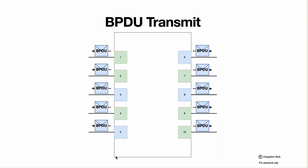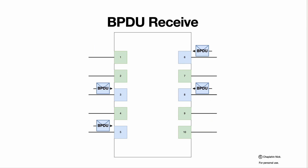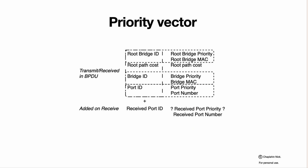Assuming STP is enabled on all ports, the device sends BPDU packets — the STP frames carrying information — to all neighbors on ports where STP is enabled, and receives BPDUs on ports where STP-aware and STP-enabled neighbor devices are placed. The most important information transmitted and received in a BPDU is: root bridge ID, root path cost, bridge ID, and port ID.